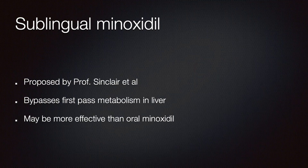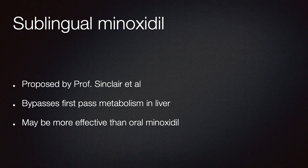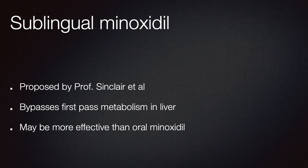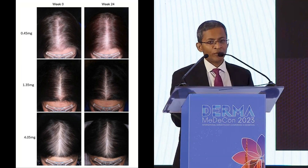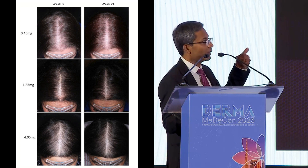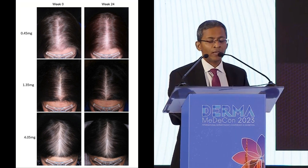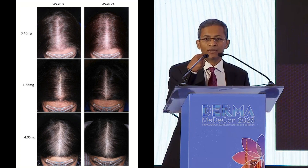Something new from recent papers: sublingual minoxidil. When you take minoxidil orally there is first-pass metabolism, so not all of it reaches the hair follicles. Professor Sinclair from Australia has suggested that if you take it sublingually, you bypass this first-pass metabolism, getting a much higher amount reaching the hair follicle and therefore a better response. His study used incredibly low doses — starting at 0.45 milligrams up to 4.05 milligrams. The problem is you can't use standard oral tablets sublingually — they don't dissolve well and don't taste good. Sublingual minoxidil is only available in a few countries, but when it becomes available, this may be the main way we use minoxidil.